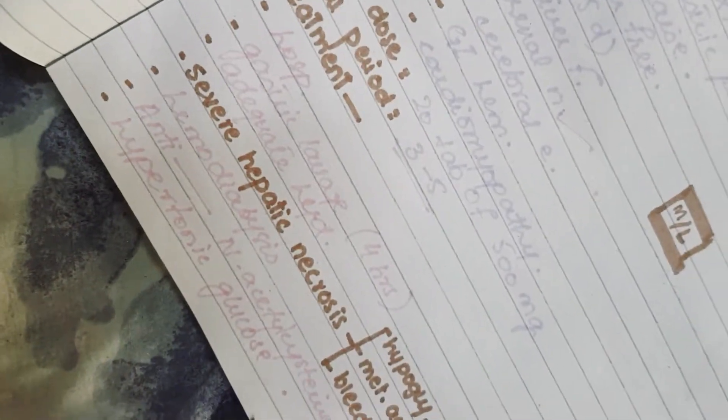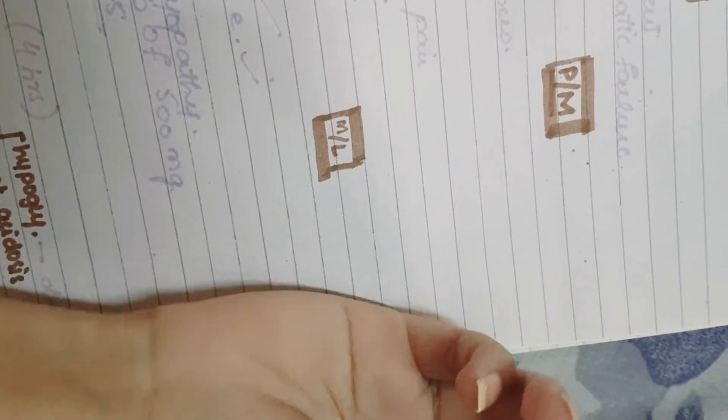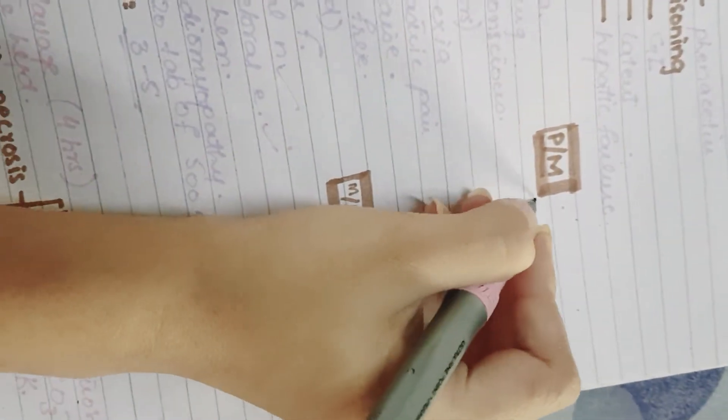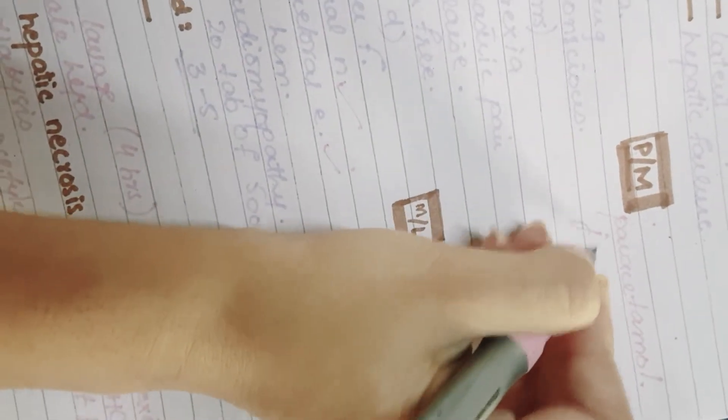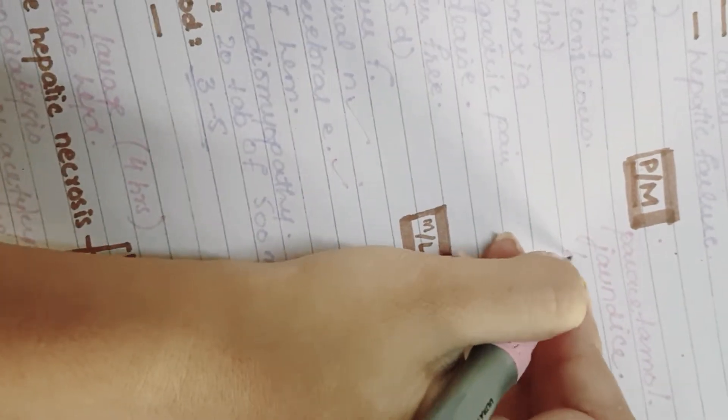Next important thing is what are the post-mortem changes or autopsy changes that we are going to see. As we know it is a case of paracetamol poisoning, so there will be paracetamol remains in the stomach, there may be jaundice because of hepatic failure, and there will be hemorrhages, more commonly known as petechial hemorrhages.